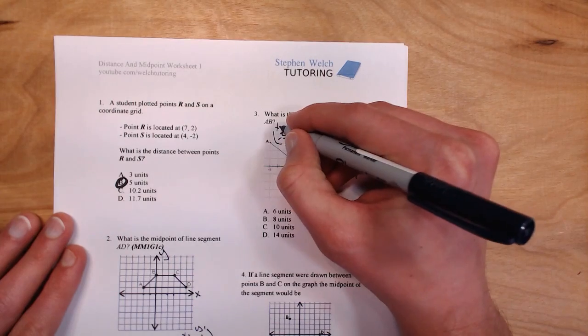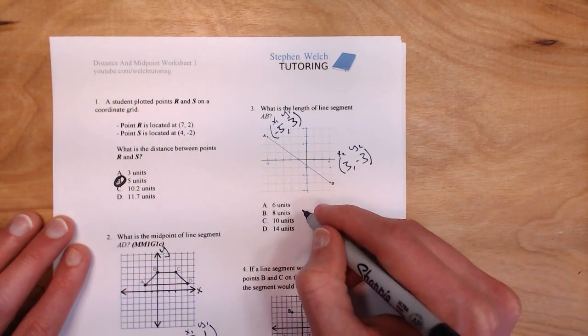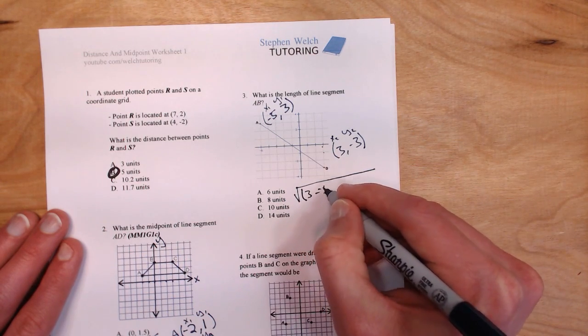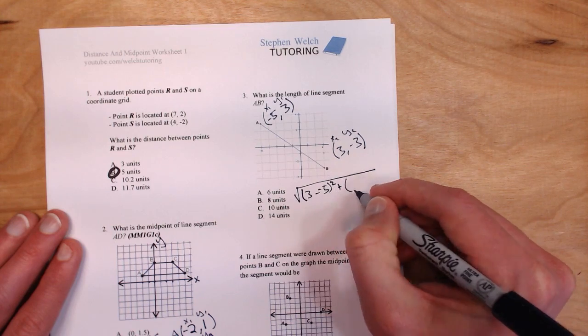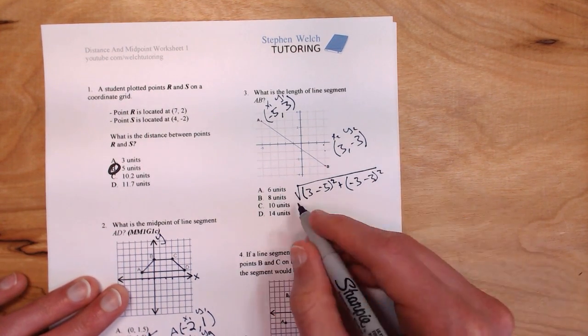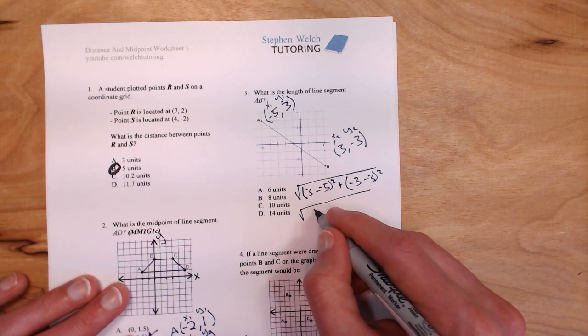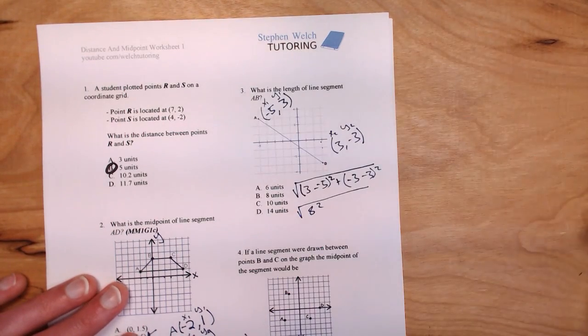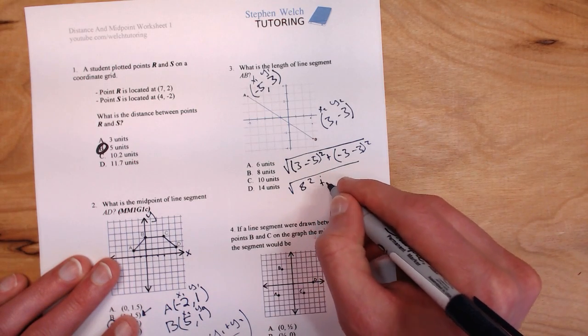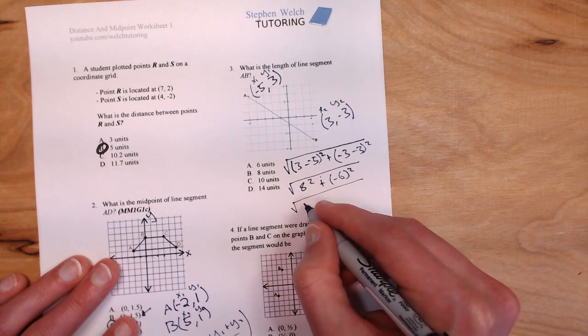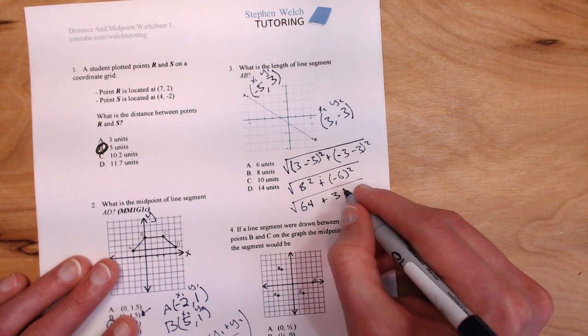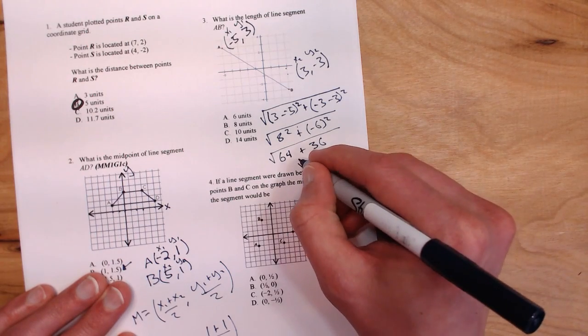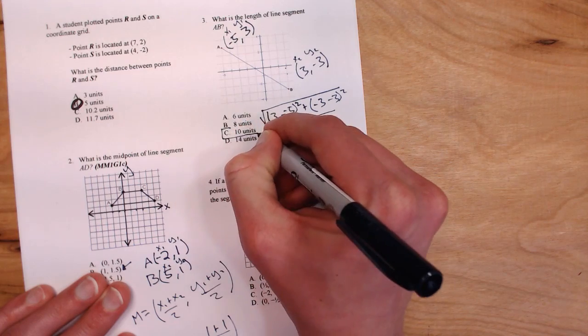Now let's label these. So x1, y1, and x2, y2. Distance formula, make sure you have it memorized. I'm going to plug in my numbers here. Remember, it's x2 minus x1. Here I get 3 minus negative 5, so you got to be careful with your minus signs. And here, I have negative 3 minus 3 squared. So 3 minus negative 5 is 8. And 3 minus 3 is actually negative 6, so plus negative 6 squared. 8 squared is 64. Negative 6 squared is 36, not negative 36. Remember to use your parentheses. This is the square root of 100, which is 10. So the answer must be C.